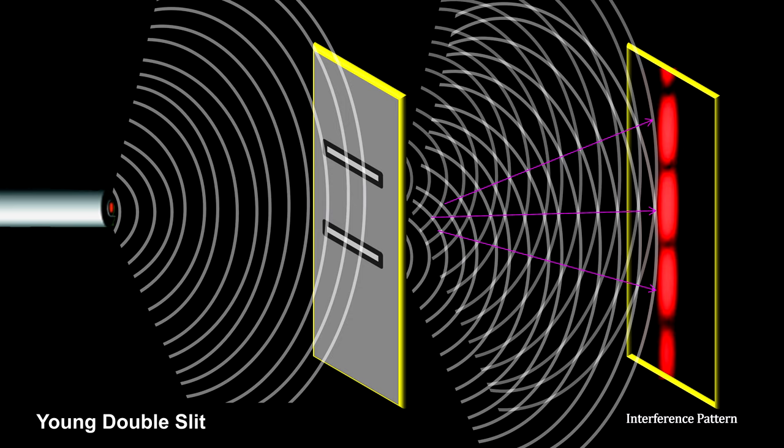This is the famous double slit experiment. When Thomas Young did this double slit experiment, he showed conclusively that light diffracted and therefore was a wave.